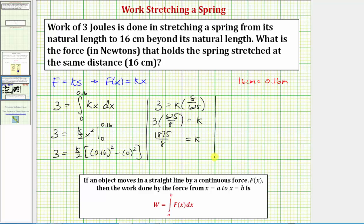Which means now we know our force function for the spring is big F of x equals the spring constant k, which is 1,875 divided by eight times x, which should be the distance the spring is stretched beyond its natural length in meters.